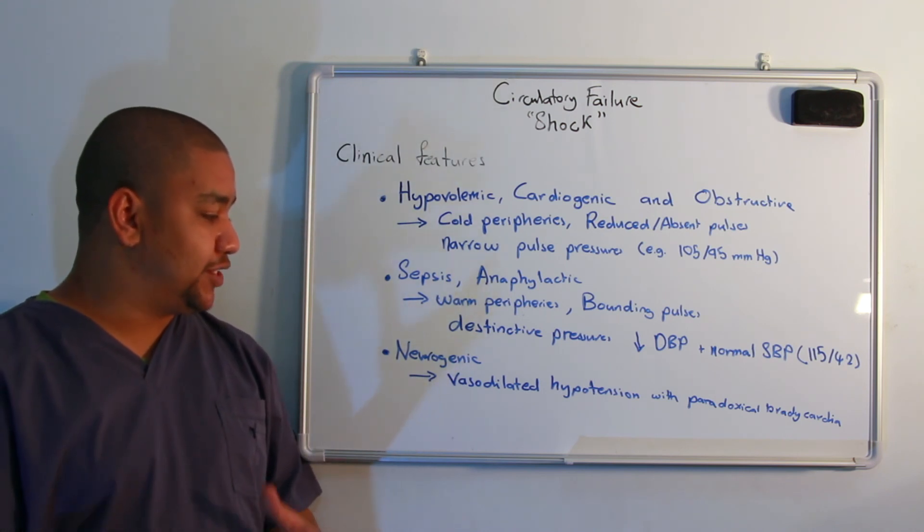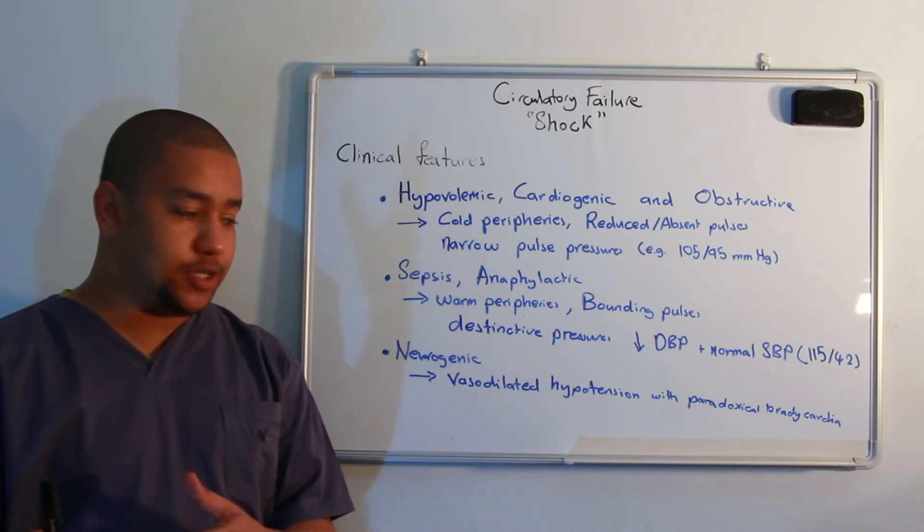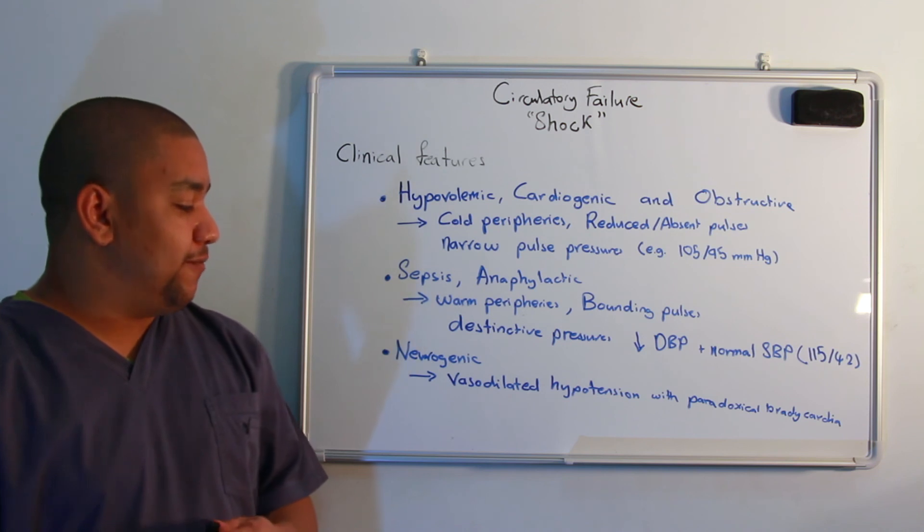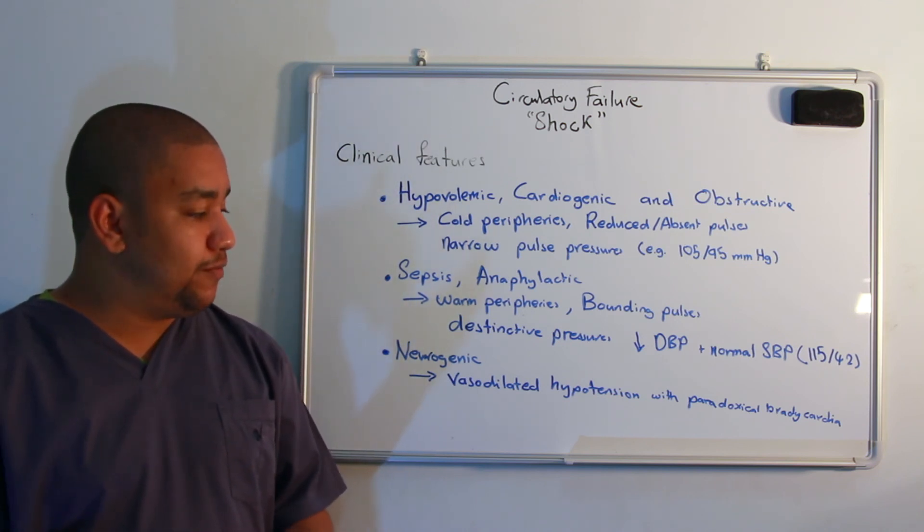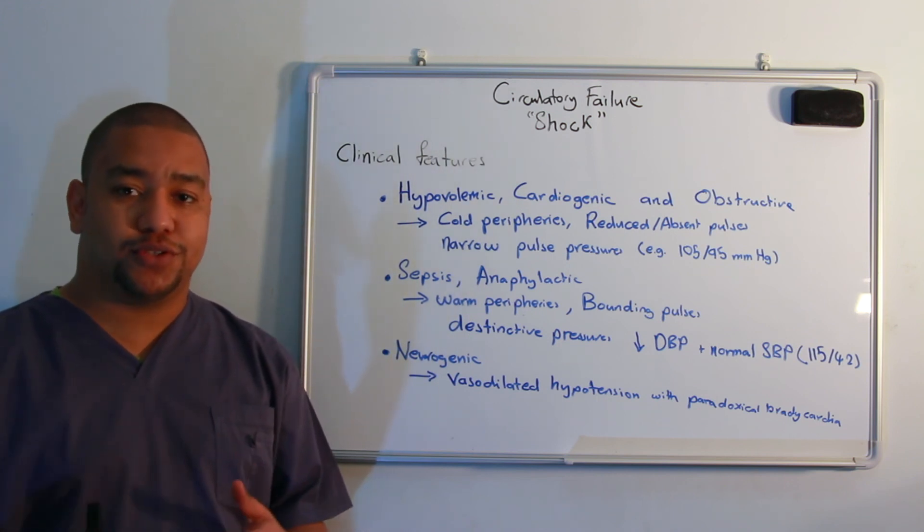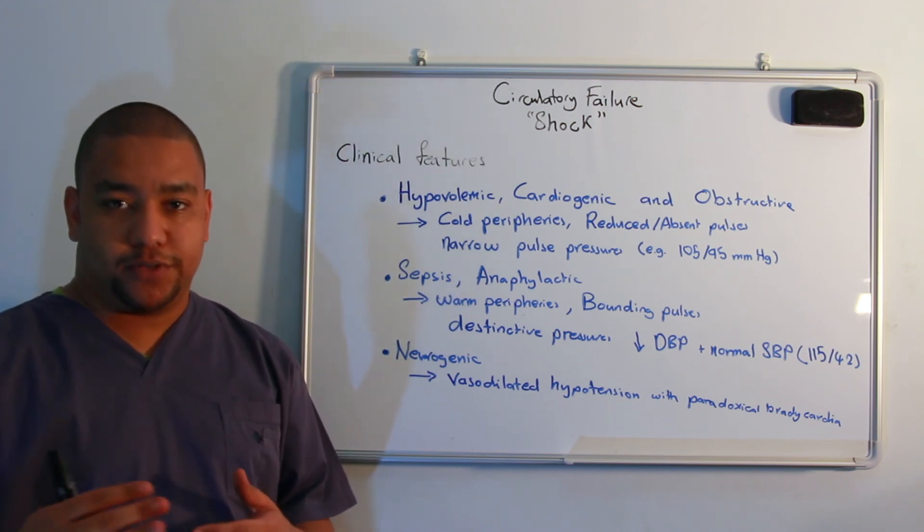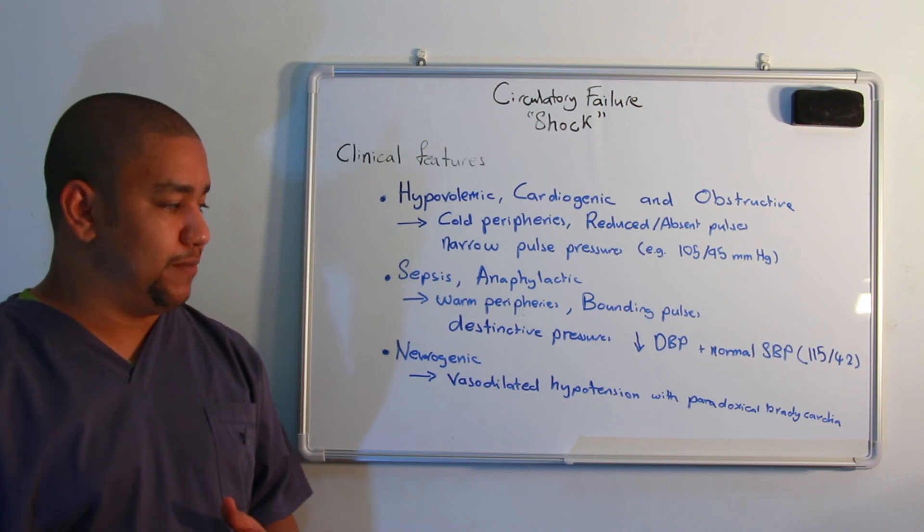In neurogenic shock, there would be vasodilation and hypotension. However, due to the abnormal vasomotor response, there would be a paradoxical bradycardia.